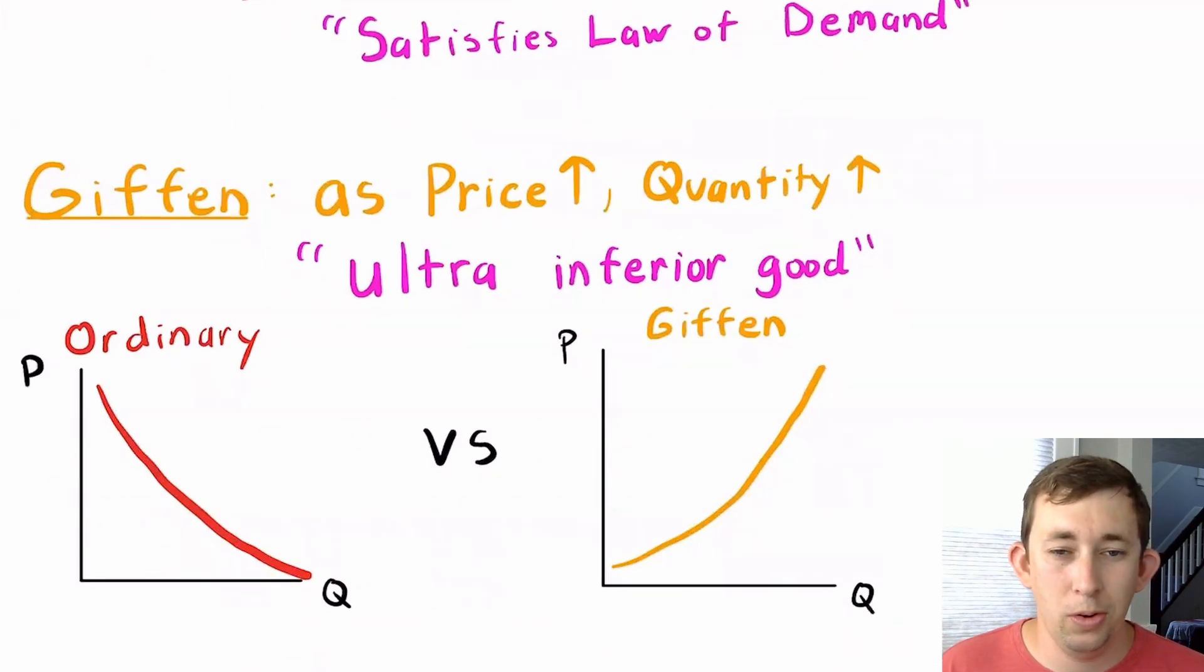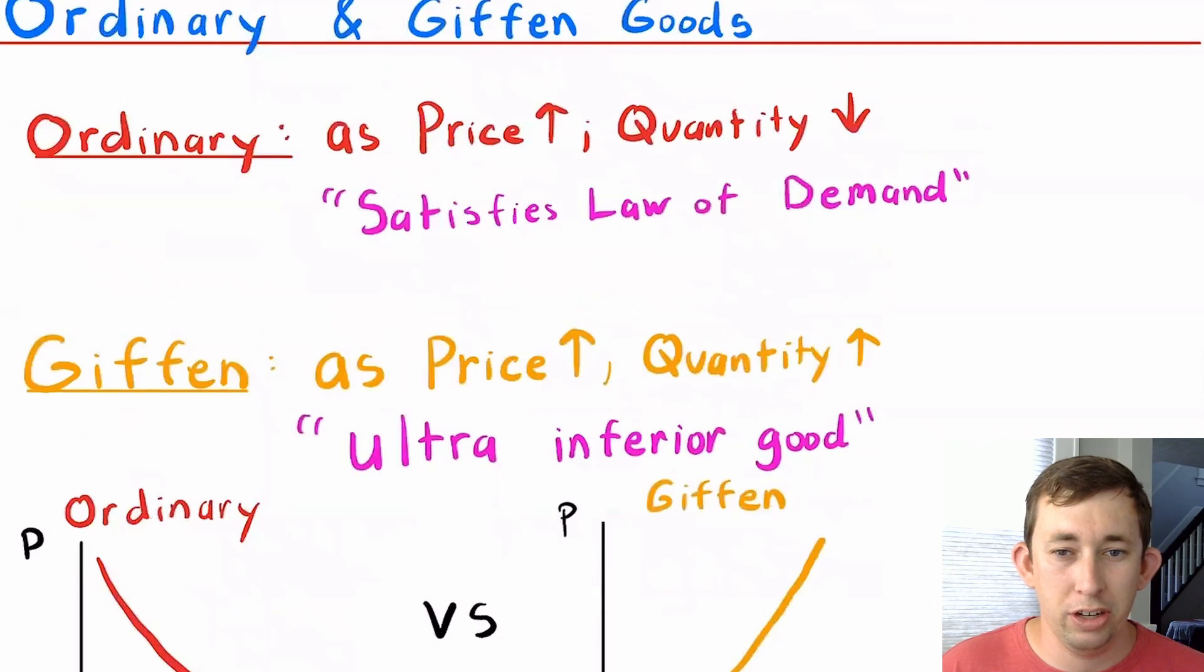Something really important to note about both ordinary and Giffen goods is that they do not relate to wealth. So ordinary and Giffen goods are related to how quantity changes with respect to price. Ordinary and Giffen goods do not relate the amount of quantity that's bought to the amount of wealth or income that you have.